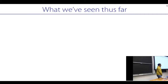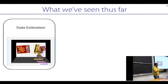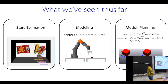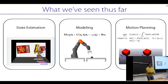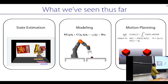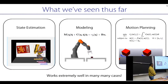So far in this class, we've covered state estimation — segmentation, pose estimation, and so on — as well as physics modeling. Given a good estimate of state and a reasonable model, we do some version of motion planning to extract a controller. This works really, really well — arguably better than RL does. But there are some places where it might fall short, which is why we should study RL.